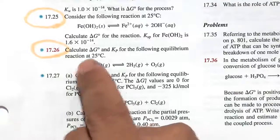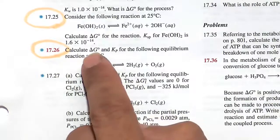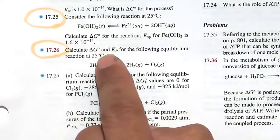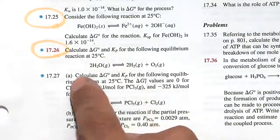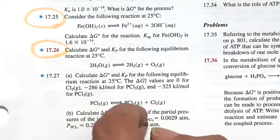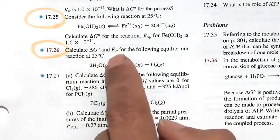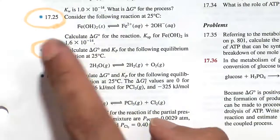In this problem 17.26, we're asked to find delta G, the free energy change at standard state, as well as the equilibrium constant in terms of pressure, Kp, for this reaction. This reaction is undergoing equilibrium, and we want to calculate Kp, but first we'll calculate delta G.